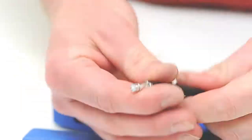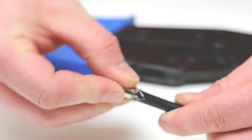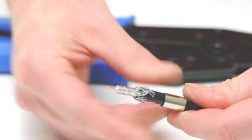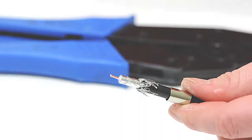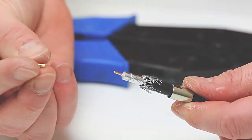Fold the braided shield on top of the jacket, slide the ferrule over the braid and the jacket. Insert the center pin of the center conductor.